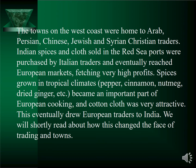The towns on the west coast were home to Arab, Persian, Chinese, Jewish, and Syrian Christian traders. Indian spices and cloth were sold in Red Sea ports and purchased by Italian traders, eventually reaching European markets at very high profit. Spices like pepper and cinnamon, which grew in tropical climates, became an important part of European cooking, and cotton cloth was also very attractive. This eventually drew European traders to India.